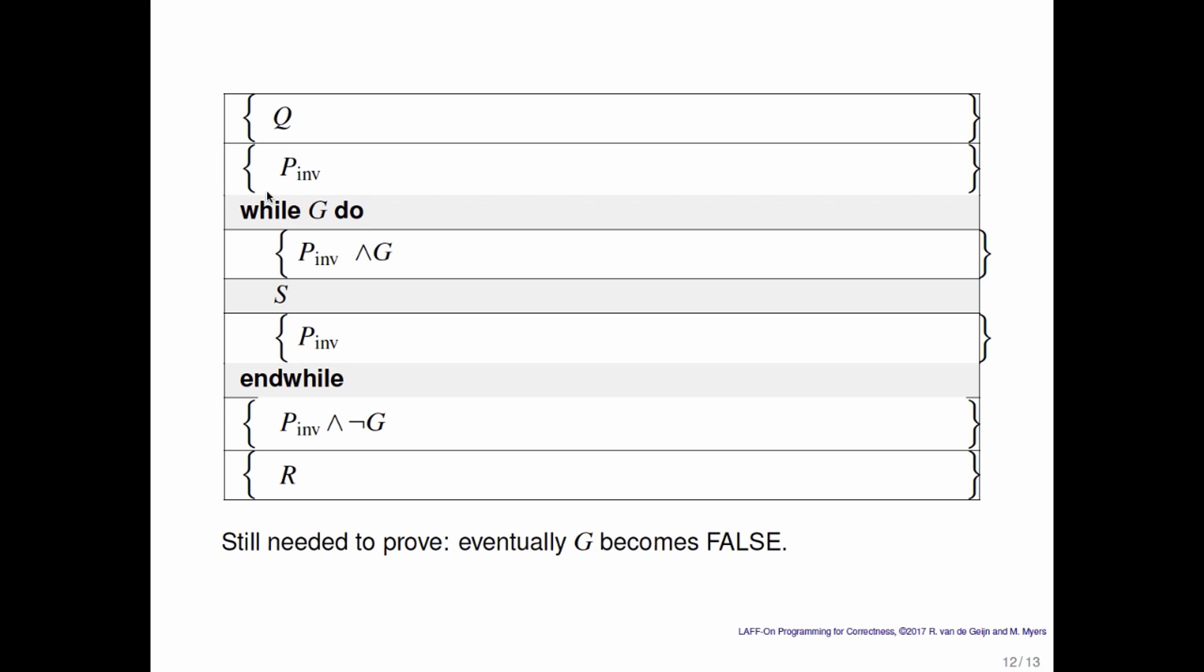What we haven't discussed is how to prove that eventually the loop guard becomes false. That's important because otherwise you may end up in an infinite loop. And notice that we want commands to finish. Otherwise you can't say that they finish in a state where the post condition holds. What we're going to do for the remainder of this section is work out the details so that you learn how to prove a loop correct.